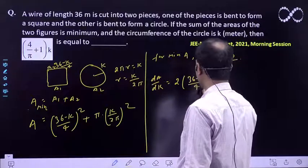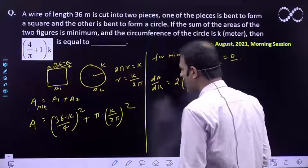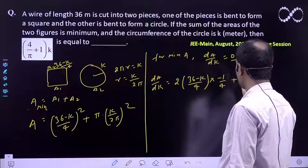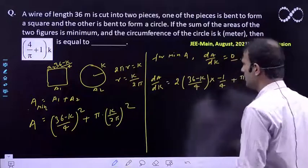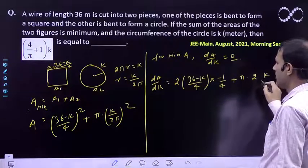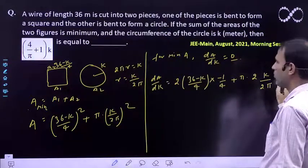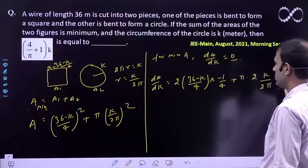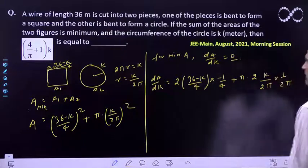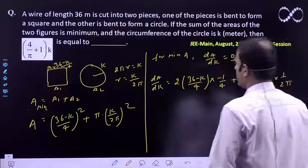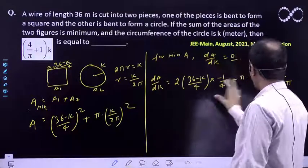...times (-1/4), plus π times twice k/2π times 1/2π. We need to set this equal to zero.